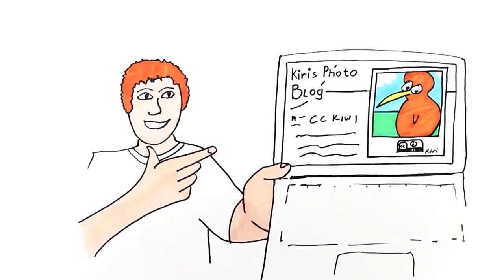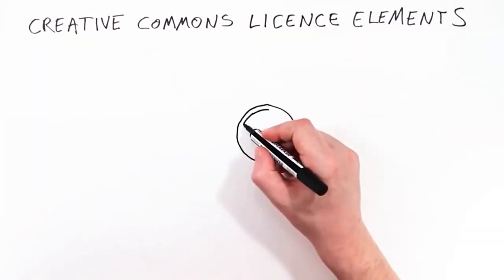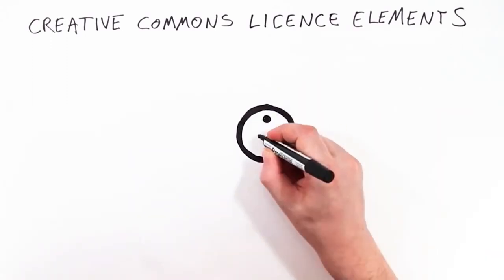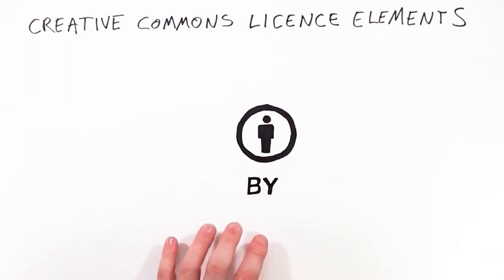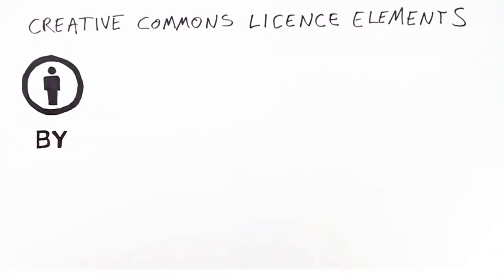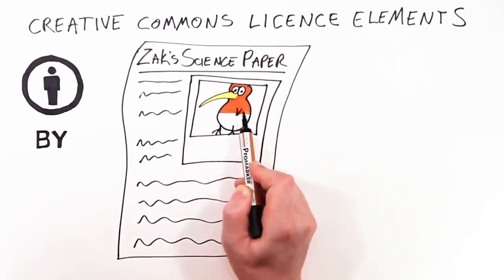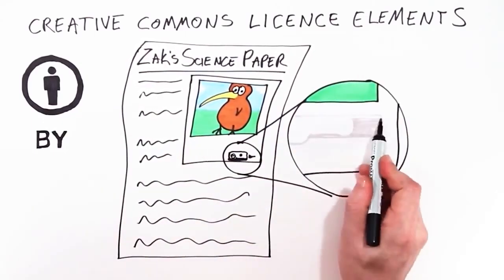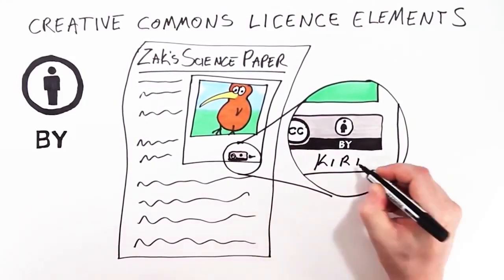There are more rules Kiri could have included. Creative Commons licenses are made up of license elements — you can think of them as rules — and each has their own special symbol. This is attribution. It means that Zach must acknowledge Kiri when he publishes his science project containing her photo.